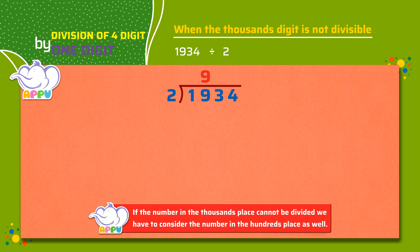Step two. We multiply two and nine, we get eighteen. Step three. We subtract eighteen from nineteen, we get one. Next, we bring down the number in tens place, which is three. So the number now becomes thirteen.